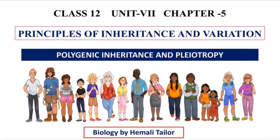We cannot say that polygenic inheritance and pleiotropy are totally related to Mendel's work, because in Mendel's work, the characters selected had two alternative forms of alleles — for example, purple flower and white flower. But we have also seen that there are many experiments that don't follow Mendel's work, such as incomplete dominance, co-dominance, and multiple alleles. So polygenic inheritance and pleiotropy also don't follow Mendel's work.